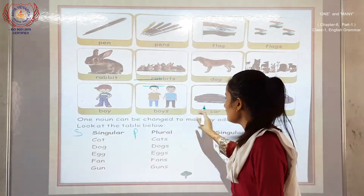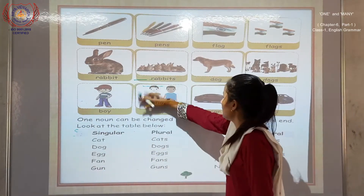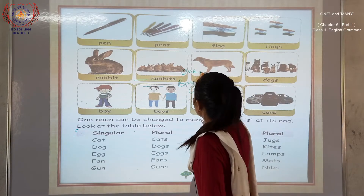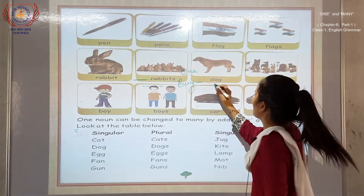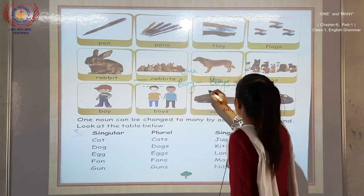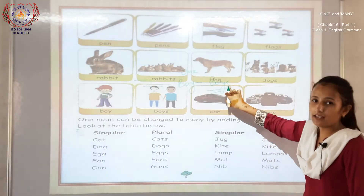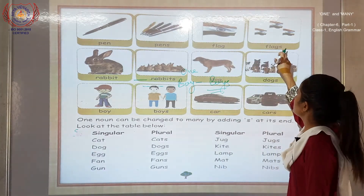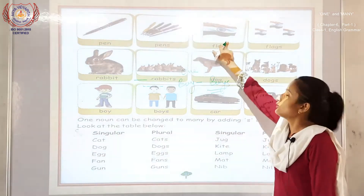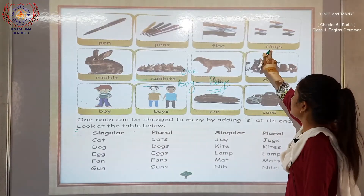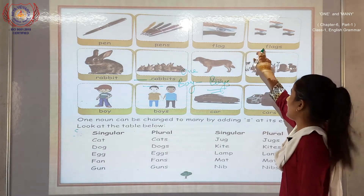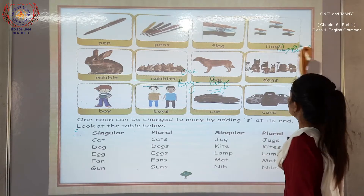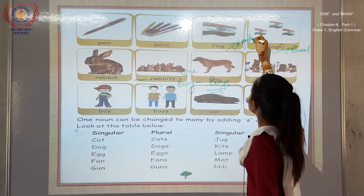For example: boy — B-O-Y — this is one, singular. He is a boy. But when we add S — B-O-Y-S — they are boys, and this is plural. Next: flag — F-L-A-G. To convert singular to plural, we add S. F-L-A-G-S — flags — this is plural, and the single flag is singular.